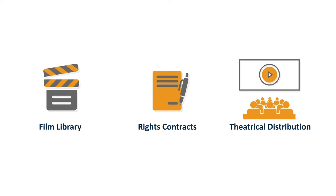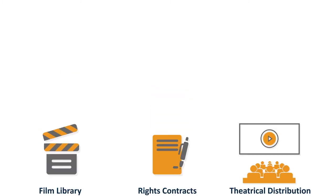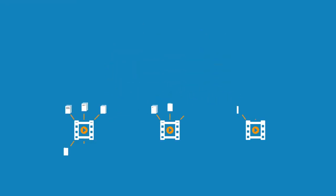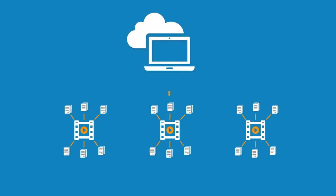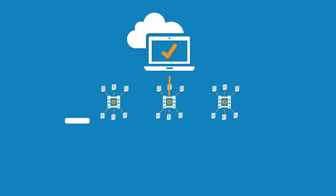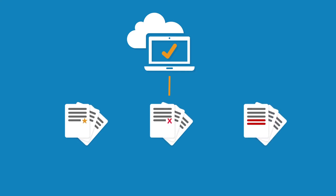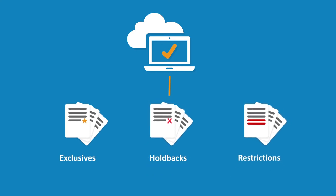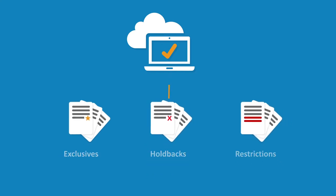offering a suite of applications to manage all aspects of the business. The CP Rights application takes all your film content and metadata and stores it in a single secure repository. It also captures your acquisitions and sales contracts in all their complexity, covering exclusives, holdbacks, restrictions, and any other details that affect your rights.